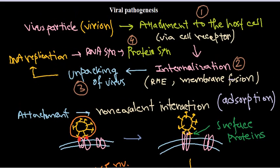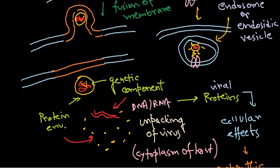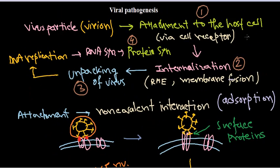That's how the different steps of viral infection and viral pathogenesis occur. In future videos, we'll be talking about how these different genetic materials provide viral proteins — how they are replicated, then transcribed, and finally translated into protein products that provide cytopathic or cytosidal effects, resulting in viral infection.